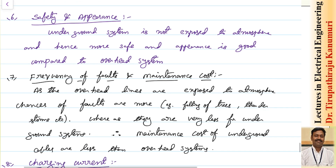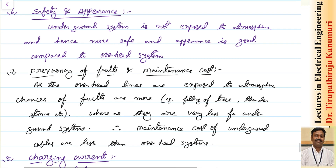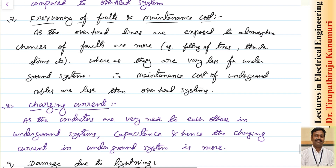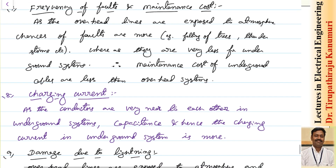Underground systems cannot be used for voltages greater than 66 kV — these are the disadvantages. Coming to advantages: safety and appearance are very good for underground cables, as they are not exposed to the atmosphere. No person will touch them and experience a shock, and appearance is neat. For overhead lines, chances of faults are more due to falling trees, thunderstorms, etc., whereas these are very less in underground systems, so maintenance cost of underground cables is much less.